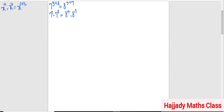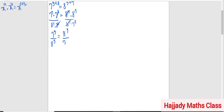So with this, we can divide both sides by 8 raised to power y times 7 raised to power 8. So 7 raised to power 8 is going to cancel out 7 raised to power 8, and 8 raised to power y is going to cancel out 8 raised to power y. So I'm going to be left with 7 raised to power y divided by 8 raised to power y, equal to 8 raised to power 7 divided by 7 raised to power 8.